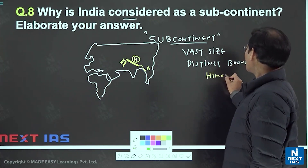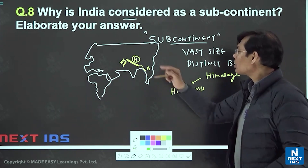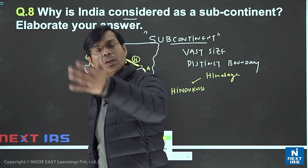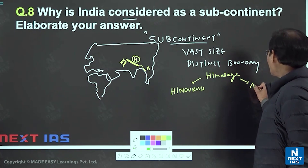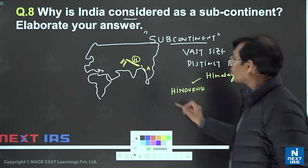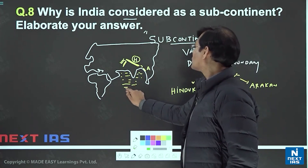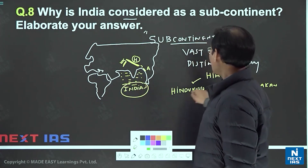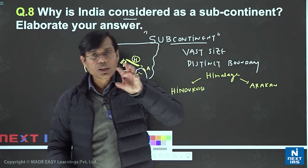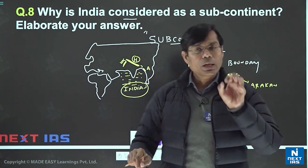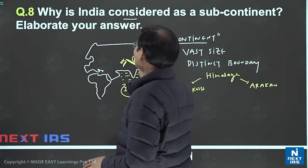So the distinct boundaries are: the Himalaya in the north, the Hindu Kush to the west — the term 'Hindu Kush' itself indicates entry into Hindustan — and the Arakan Yoma on the Myanmar boundary to the east. To the south, there is the massive water body of the Arabian Sea, the Bay of Bengal, and the Indian Ocean. Even the name 'Indian Ocean' indicates that scholars named this zone after India.